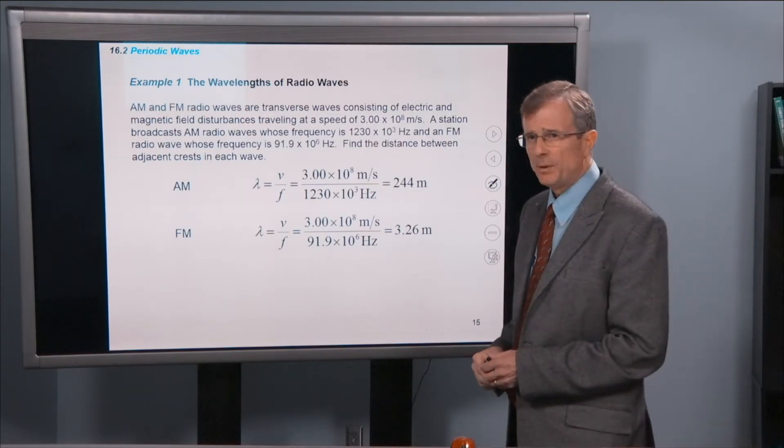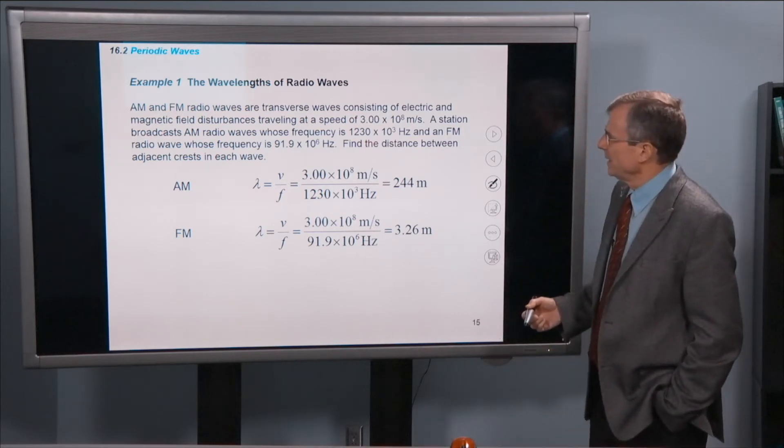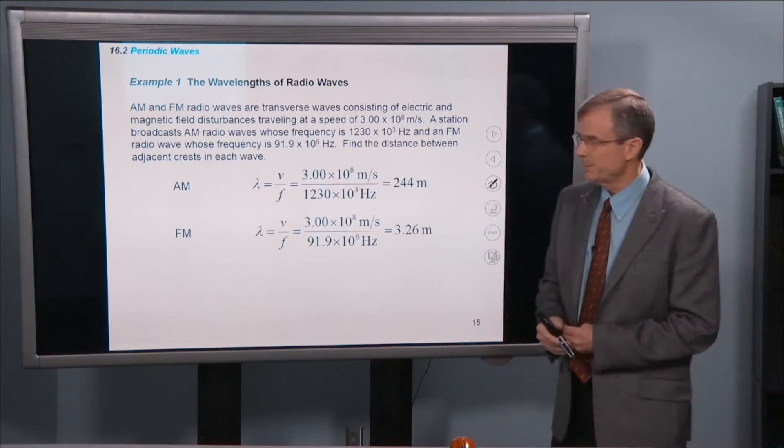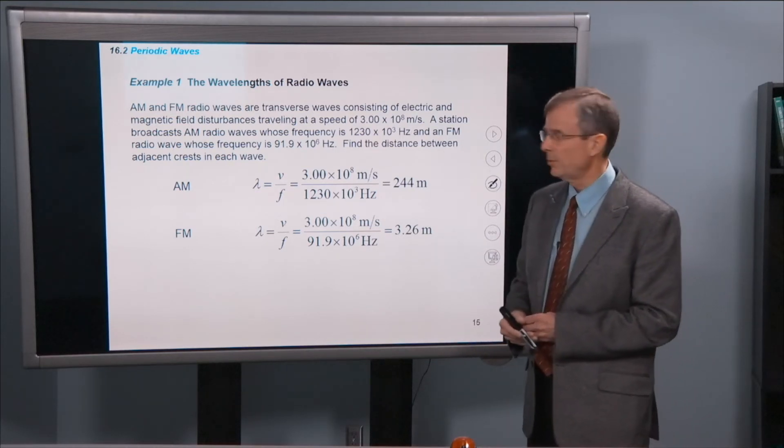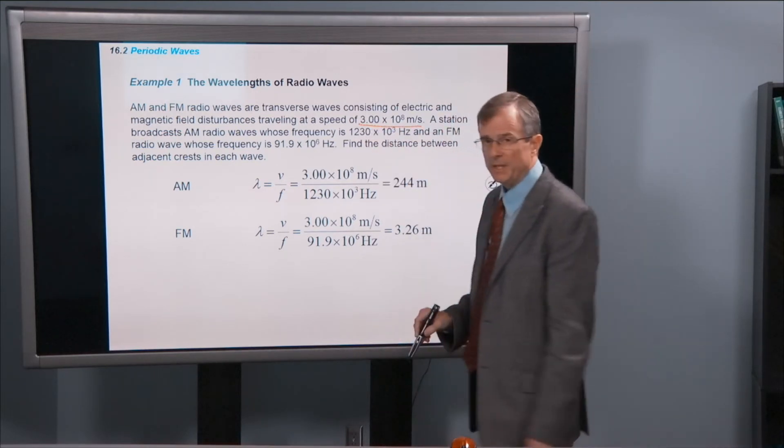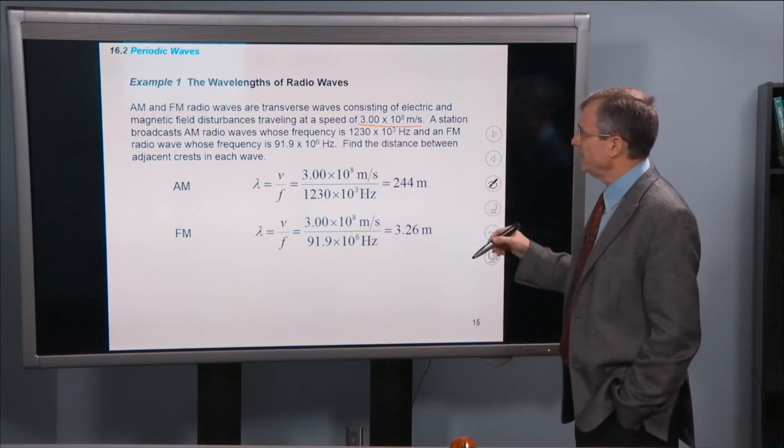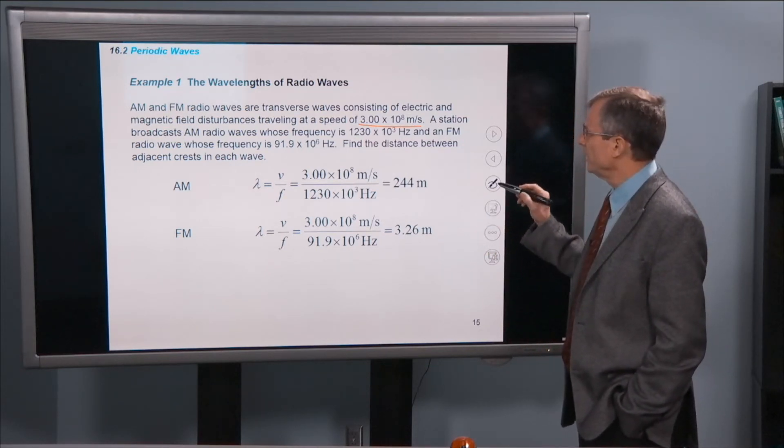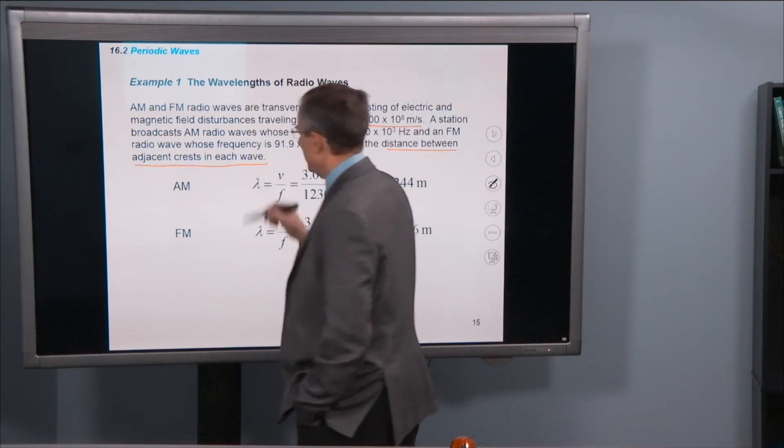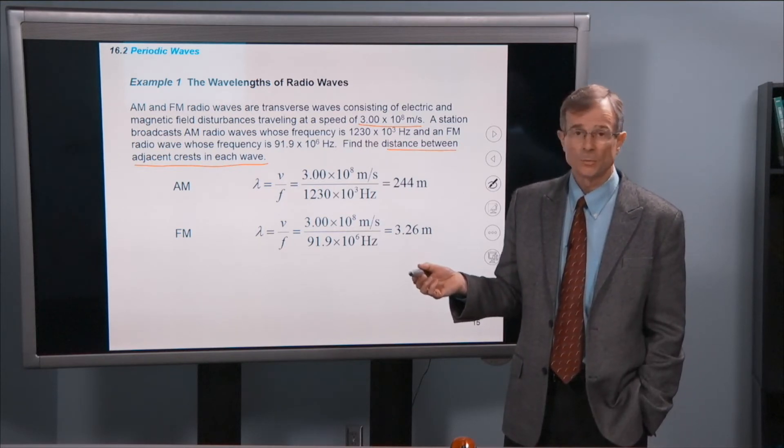A quick example. AM and FM radio waves are transverse waves that have electric and magnetic field disturbances. And we'll talk about those in later chapters this semester to understand these radio waves. And they travel, as it turns out, at the same speed that light travels, the speed of light. And so if we're interested in finding the distance between adjacent crests in each wave, and what is that distance called? There's a name for it. It's called wavelength.